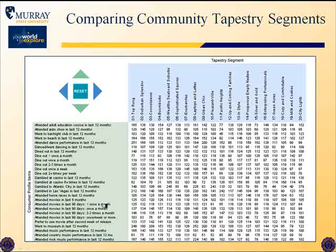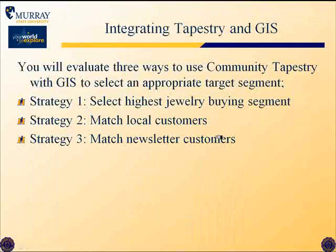The first activity shown is attending adult education classes in the last 12 months. For the top-rung segmentation group, there's an index value of 165, meaning households in that segment are 65% more likely to have attended adult education courses in the last 12 months than the national average. On the other hand, households in segment number 11, Pacific Heights, with a value of 77, are 23% less likely to have participated in that kind of behavior. So the MPIs allow us to take the profiles of the Community Tapestry segments and add information about purchasing, values, and behaviors.